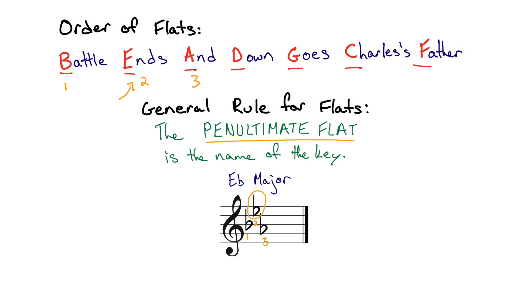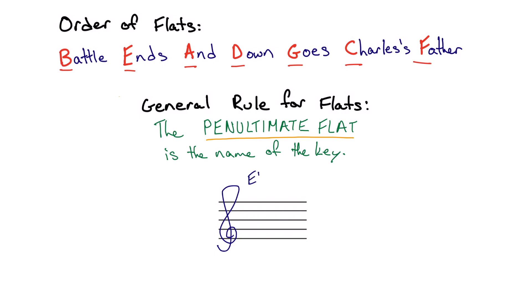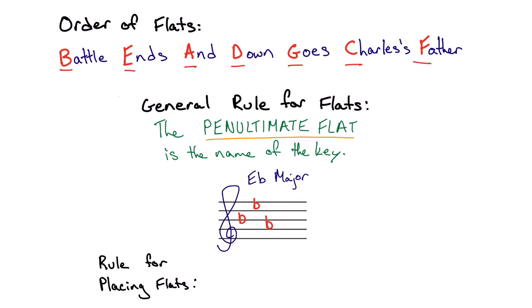Now what if somebody gave me a blank staff and told me to write the key signature for E♭ major from scratch? I've got my treble clef and I know the penultimate flat is the name of the key. The name of my key is E♭ major, so my second to last flat has to be E♭. I'll start with B♭ — that's first — then E♭. I've just hit my second to last flat, so I need one more: A♭. One thing to remember when writing flats on the staff is that flats go on the highest place on the staff below the top F.